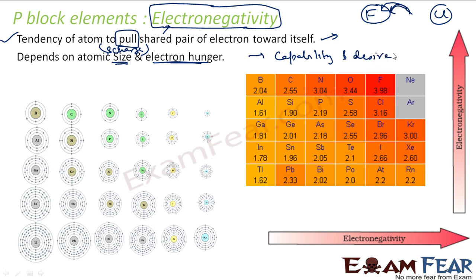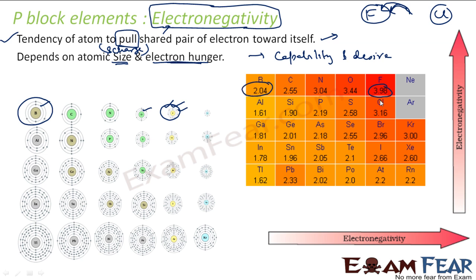Similar to electron gain enthalpy, it has a similar trend. If you compare boron and fluorine, oxygen has more hungerness for electrons. Fluorine has more hungerness for electrons because the moment fluorine gets one electron, it will become stable. So hungerness is more for fluorine. Also, the size is less for fluorine, and the charge is more for fluorine. So if you see all three parameters comparing boron and fluorine, fluorine is pretty good. Fluorine has almost four electronegativity and boron has almost two.